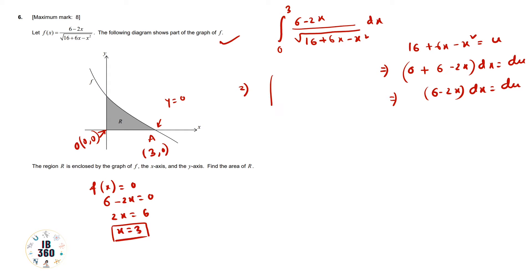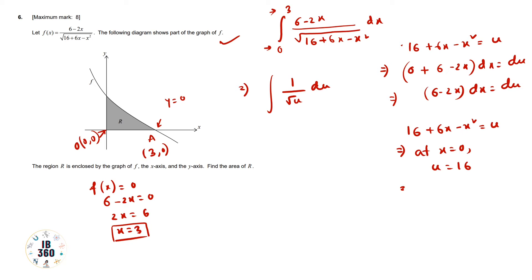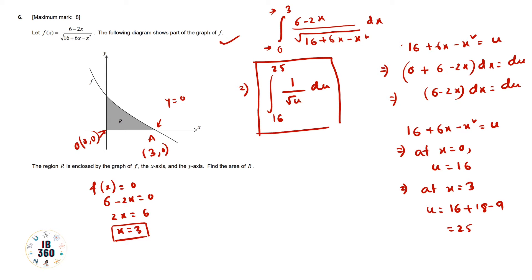The integral becomes ∫ (1/√u) du, but we need to change the limits. Using u = 16 + 6x - x²: at x = 0, u = 16; at x = 3, u = 16 + 18 - 9 = 25. So the new limits are 16 (lower) and 25 (upper).